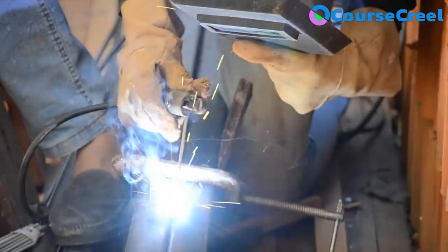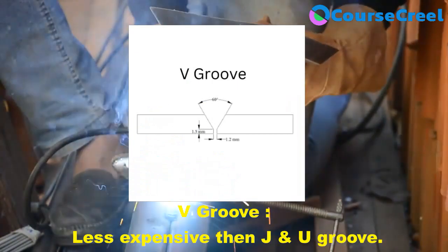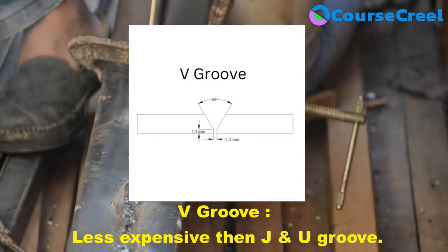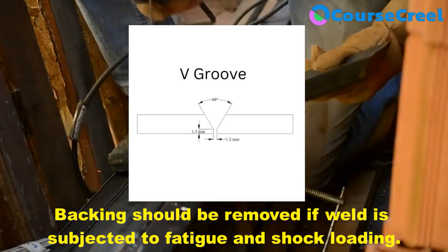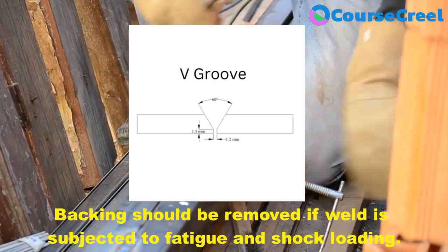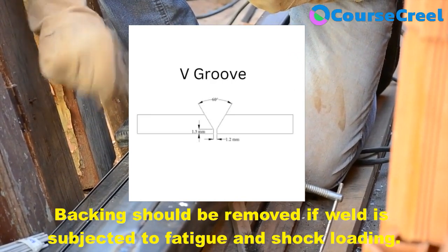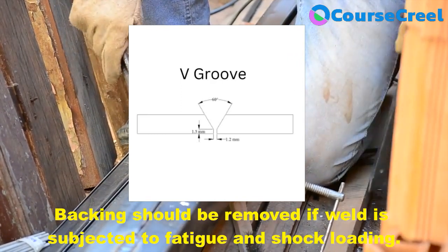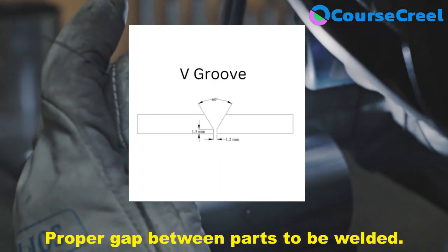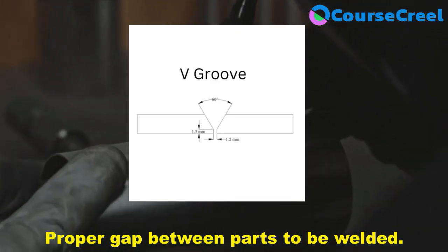For V groove: V groove requires more material than J and U grooves, but J and U grooves are more expensive compared to V groove. If a joint is prepared with the help of backing, this should be removed if the weld is subjected to fatigue, shock loading, or any kind of stress. The joint surface should be clean and free of chemicals, and there should be a proper gap between the parts — not too narrow or too wide.